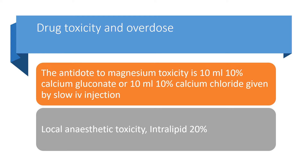Drug toxicity and overdose: the antidote to magnesium toxicity is 10 ml of 10% calcium gluconate or 10 ml of 10% calcium chloride given by slow IV injection. For local anaesthetic toxicity, you should stop injecting the local anaesthetic immediately and give intralipid 20%.